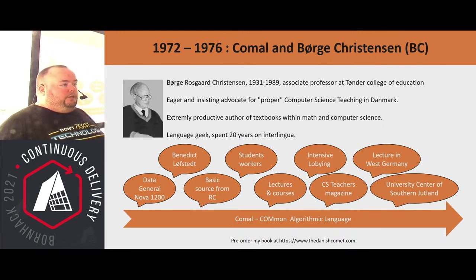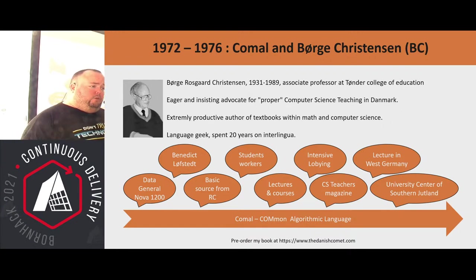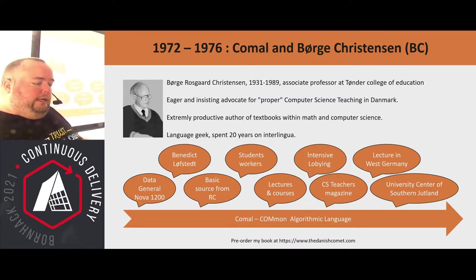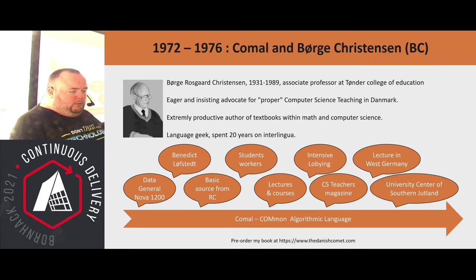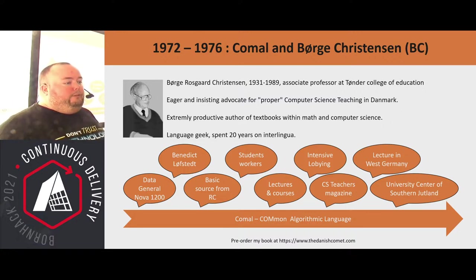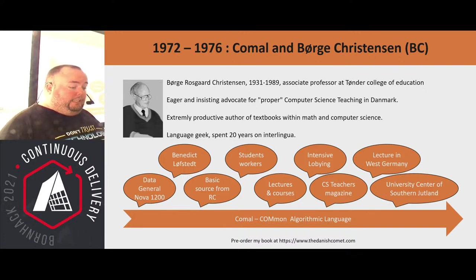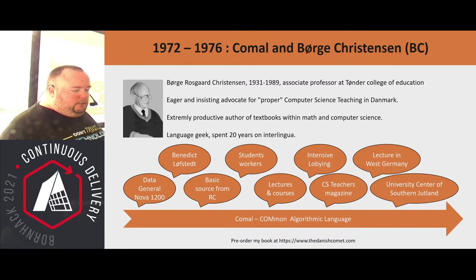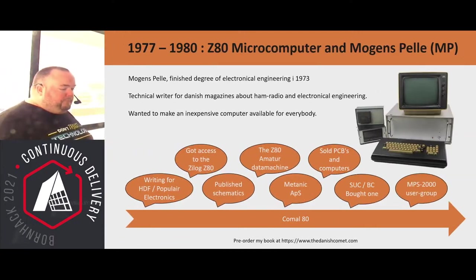He used the University Center of Southern Jutland to fund a lot of his work. It wasn't a real university — the government had promised funding around 1972–73, then pulled out, so the local municipalities kept funding it themselves. For all practical purposes it functioned as a university. They had research money, and Bo Christensen got paid to develop COMAL. Later he got a crazy idea I'll talk about shortly, but first we need to travel back in time.